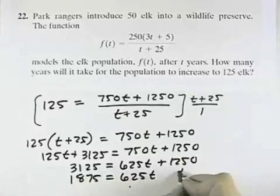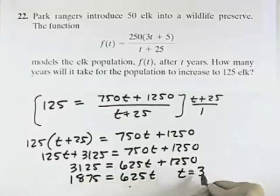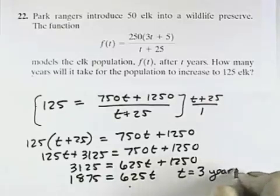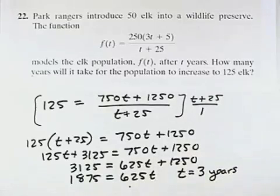If I divide both sides by 625 I'll get t equals 3. So my answer therefore would be it will take 3 years for the elk population to increase to 125.